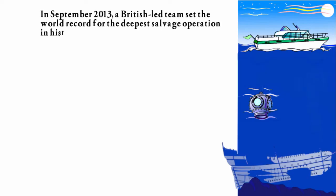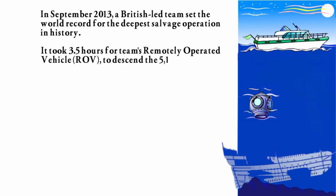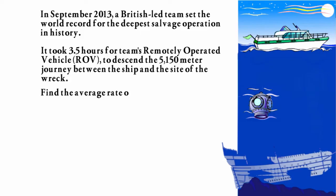So, let's look at another situation. In September of 2013, a British-led team set the world record for the deepest salvage operation in history. The team recovered 100 tons of silver coins from the wreck of a British steamship that was sunk in 1942 during World War II. It took 3.5 hours for the team's remotely operated vehicle, or ROV, to descend 5,150 meters journey from the ship to the site of the wreck.